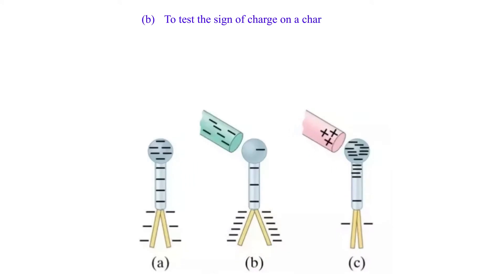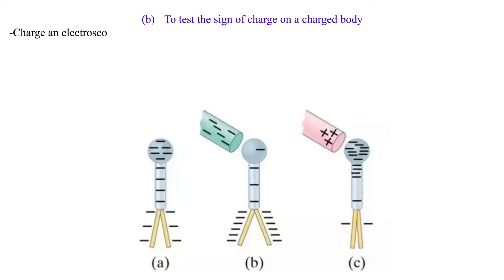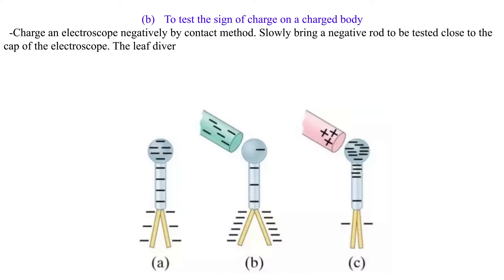B. To test the sign of charge on a charged body. Charge an electroscope negatively by contact method. Slowly bring a negative rod to be tested close to the cap of the electroscope. The leaf diverges more.